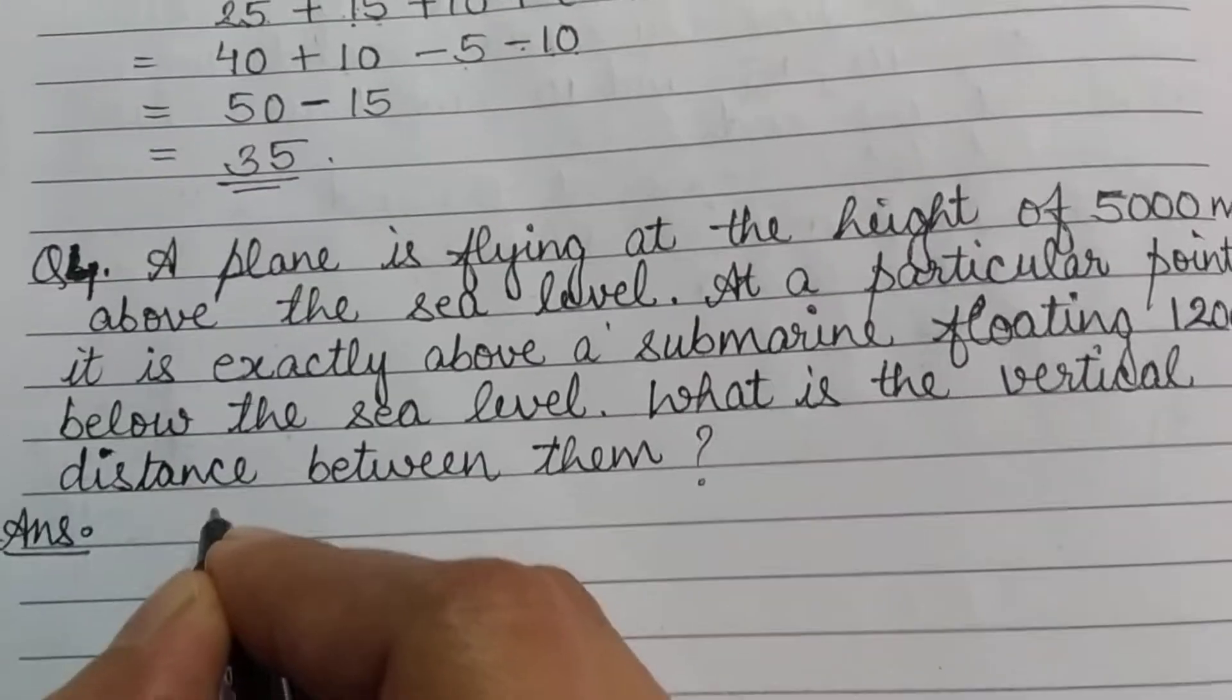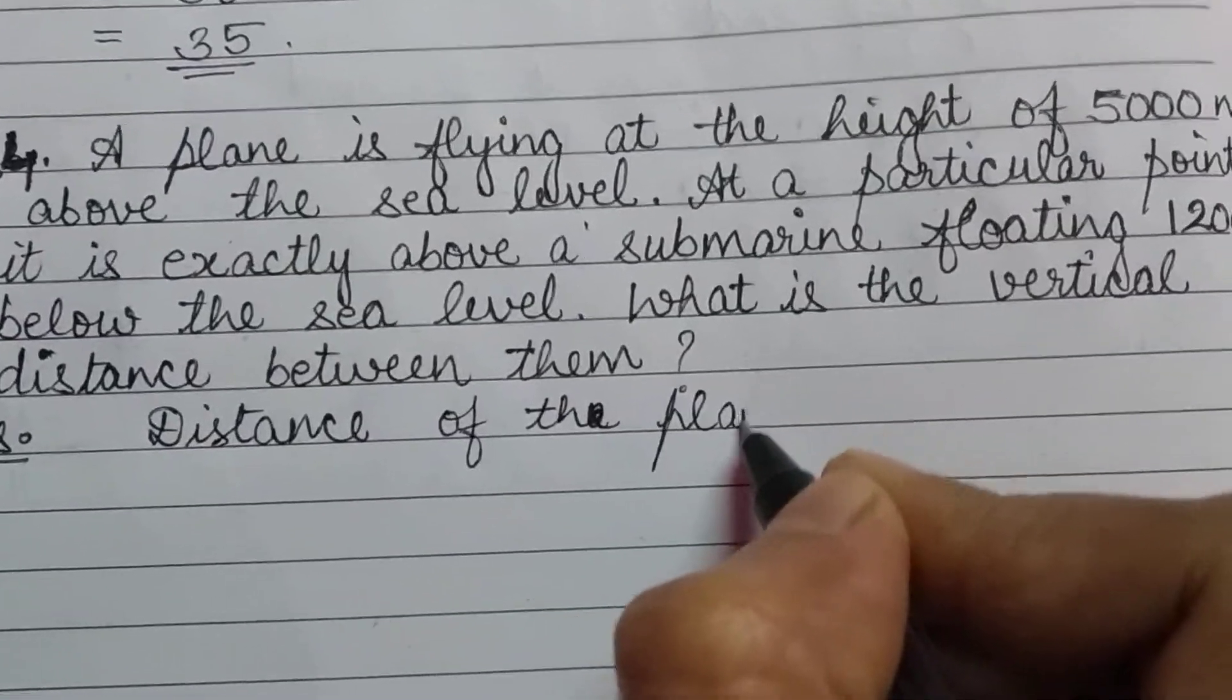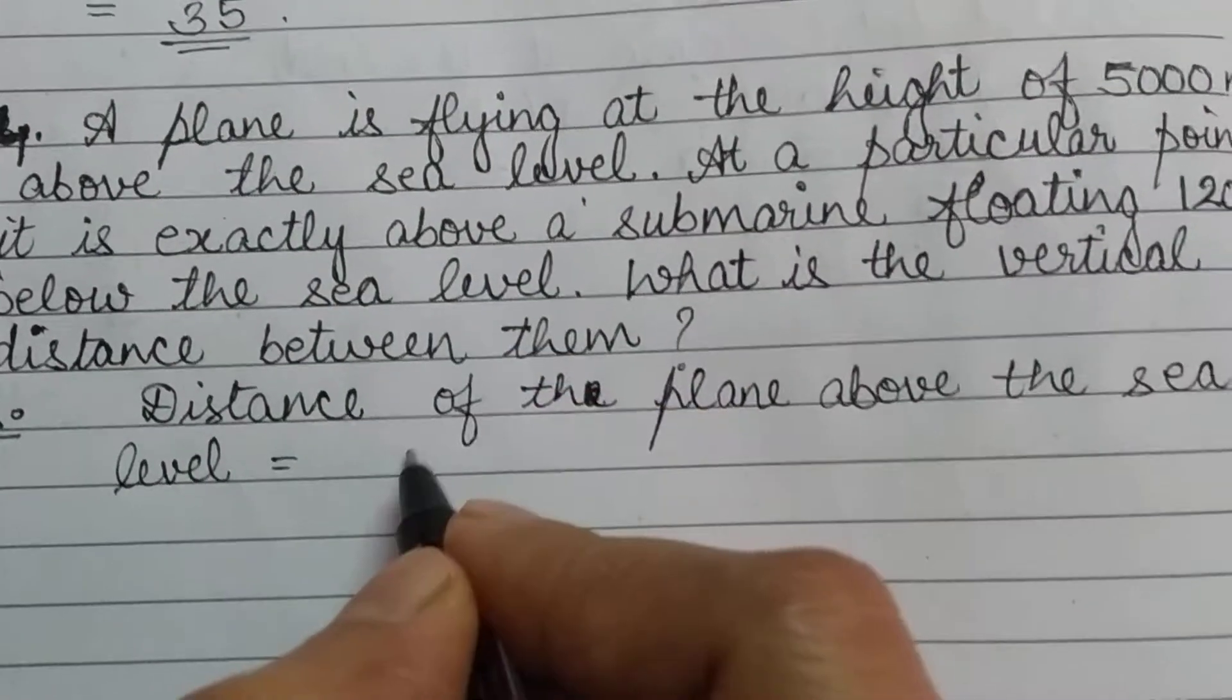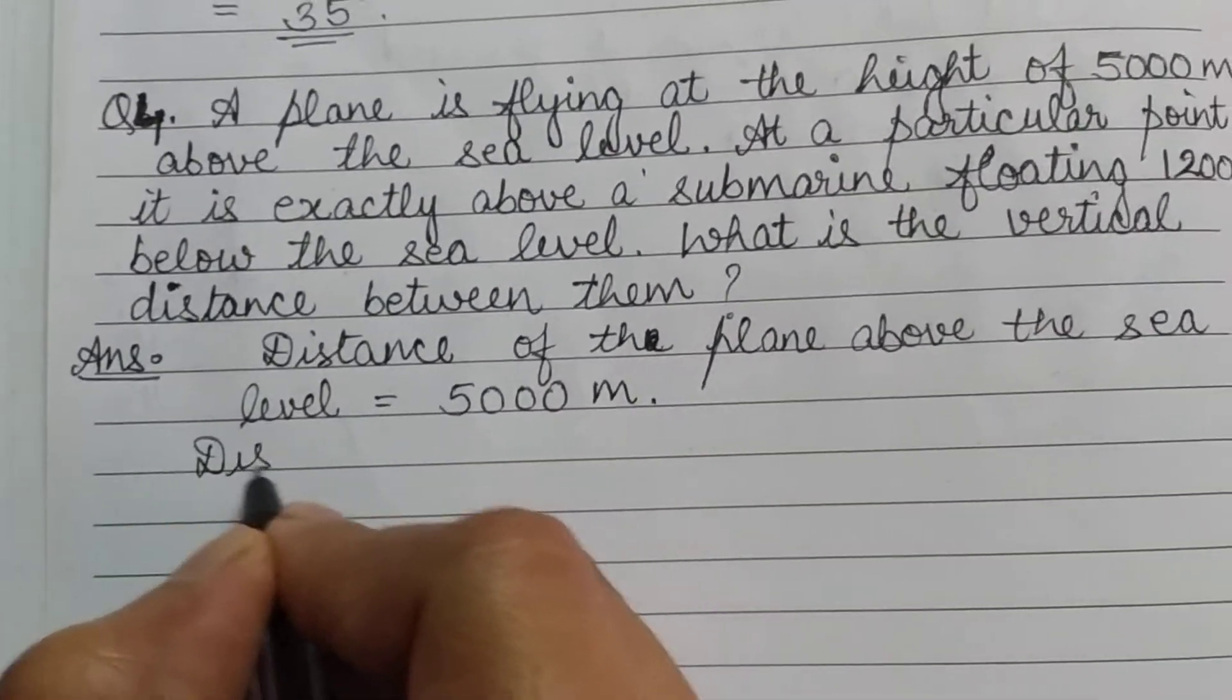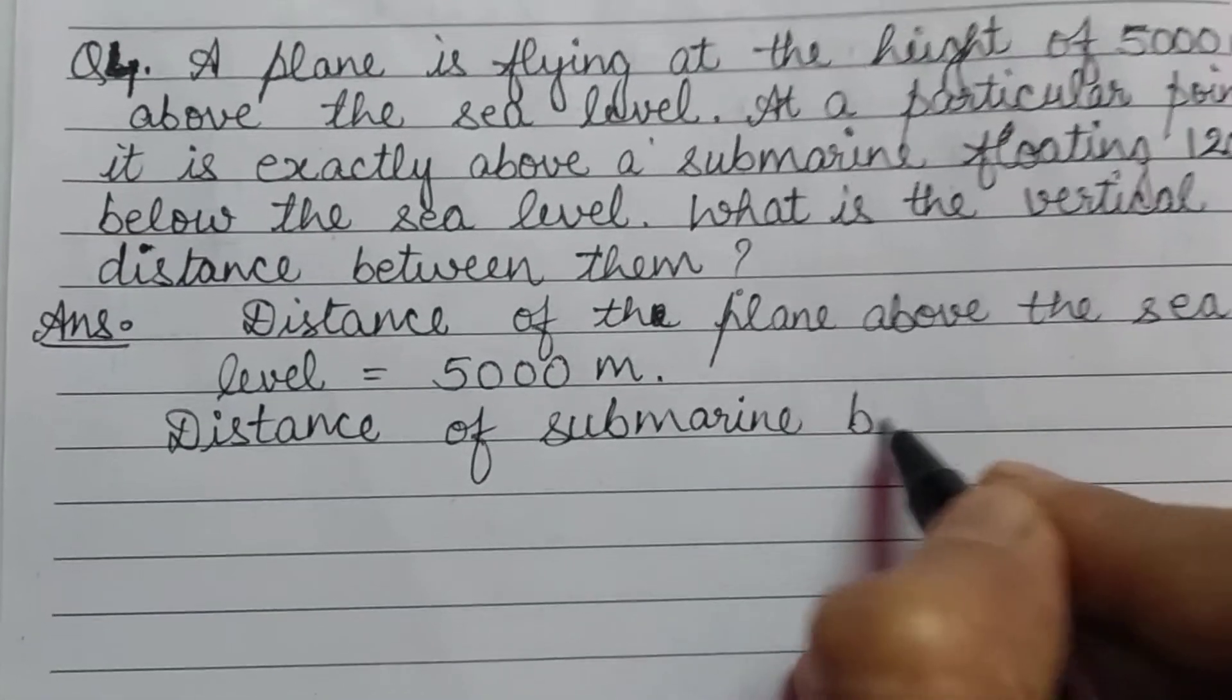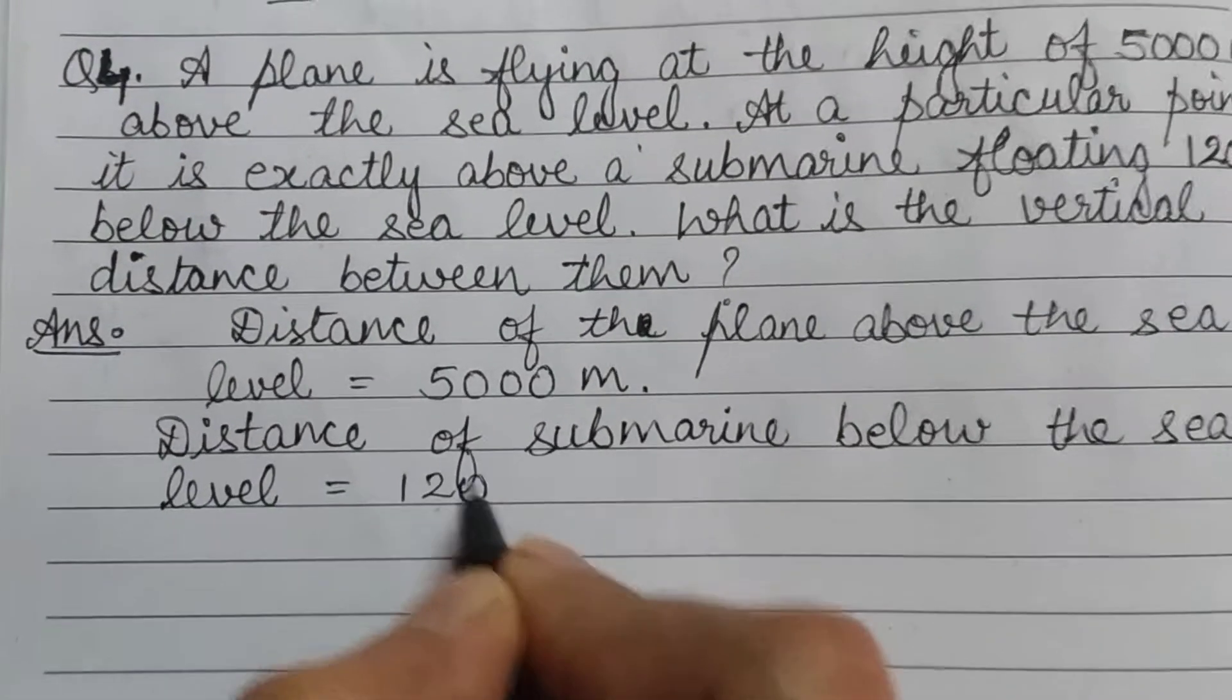Now first, distance of the plane above the sea level equal to 5000 meter. Now distance of the submarine below the sea level equal to 1200 meters.